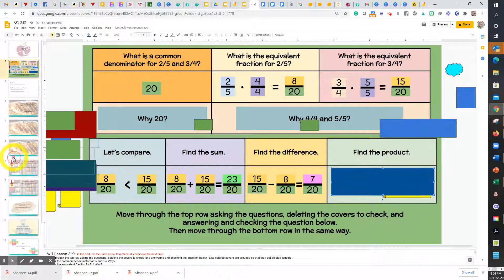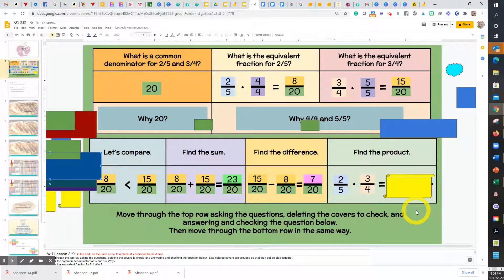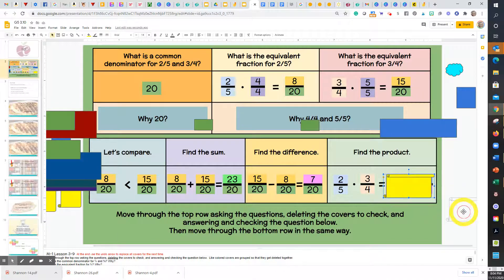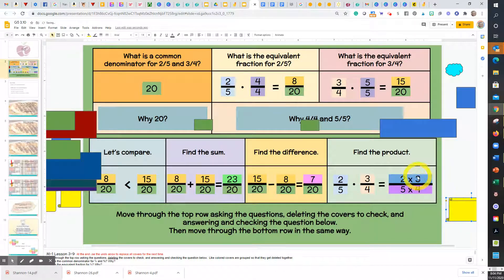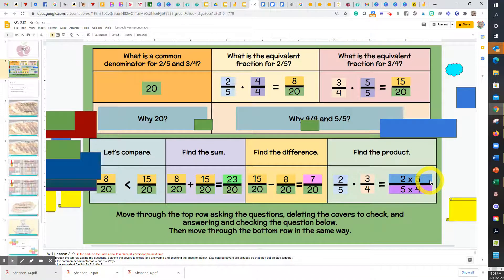Find the product. Boys and girls, read it with me. Two-fifths times three-fourths. Think about it. Class, they say the answer. We move this. Two-fifths times three-fourths would equal class, 6-twentieths. So this equation sets them up for the math they're going to do. So we might change that question actually to find the product.